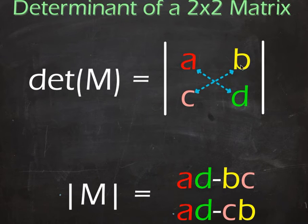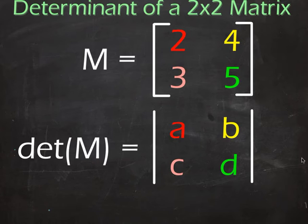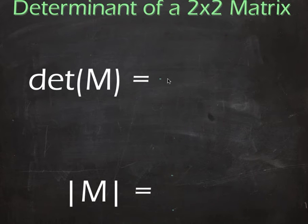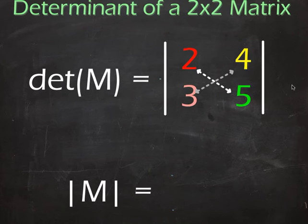To put numbers in to give it a bit of meaning, to find the determinant of this matrix M, we'd write it like that. Of course that's just to show the position of the elements. We know what the numbers are in this case, so we may as well just go straight for it.